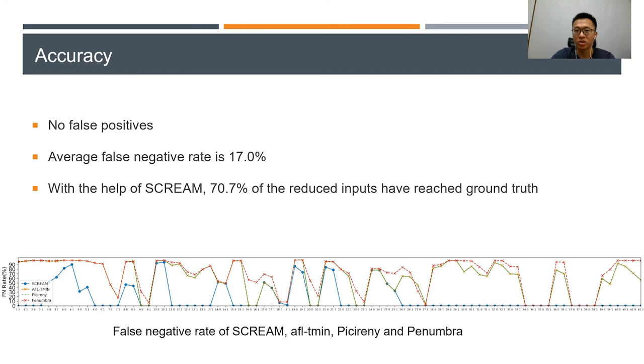For false negatives, SCREAM achieved an average false negative rate of about 17% when the false negative rates of other tools are about 60% and 70% respectively.